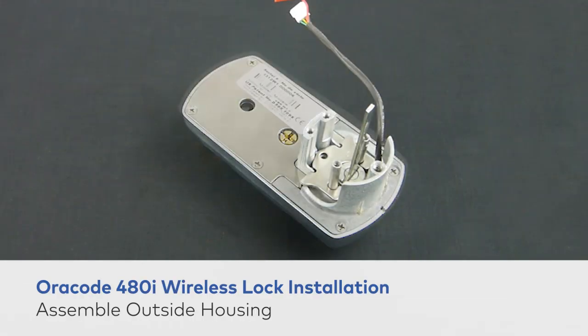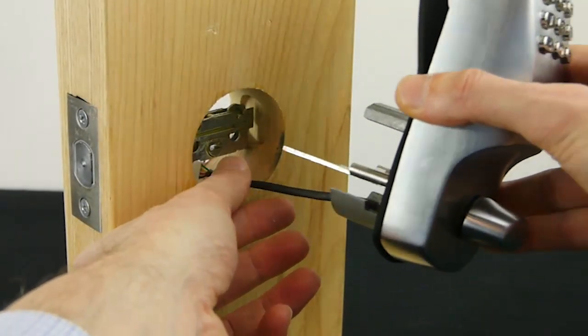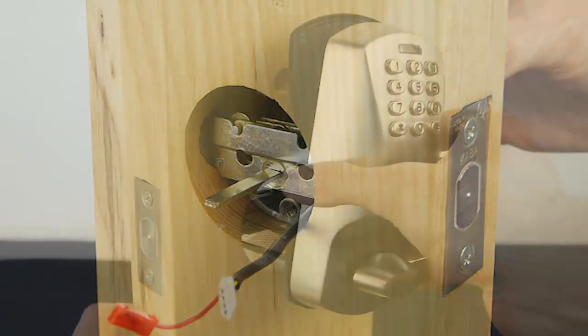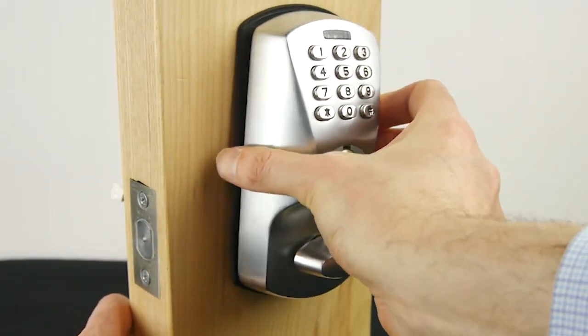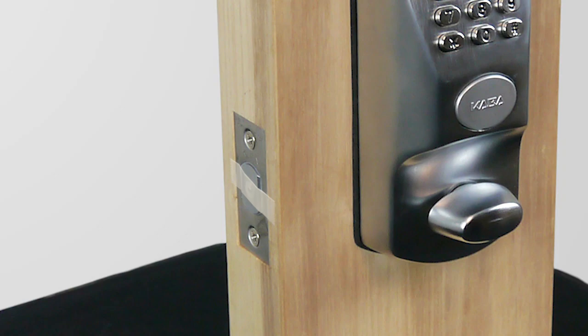To assemble the outside housing, place the gasket onto the housing and insert the housing into the door. Make sure to insert the cable through the door. Ensure the tailpiece fits through the slot on the bottom of the deadbolt.